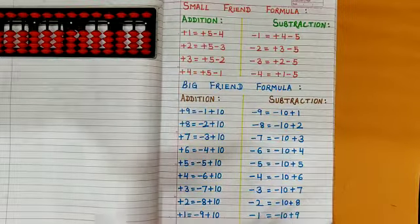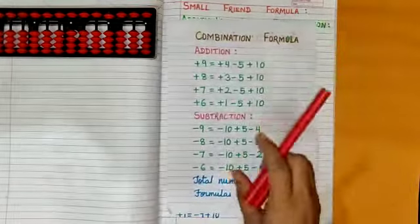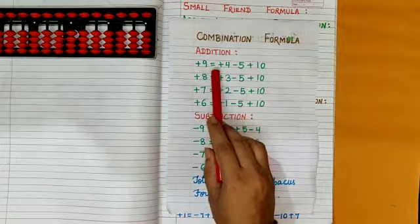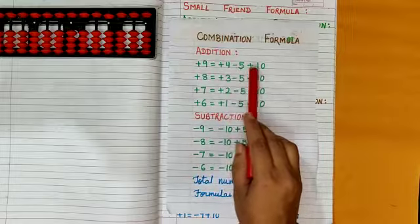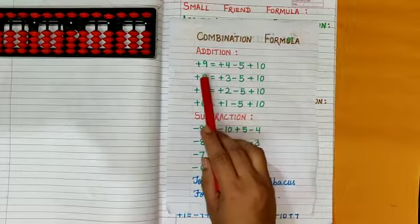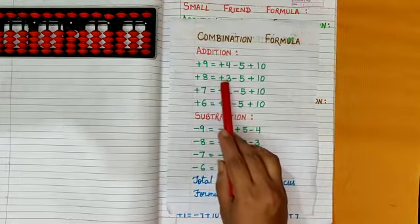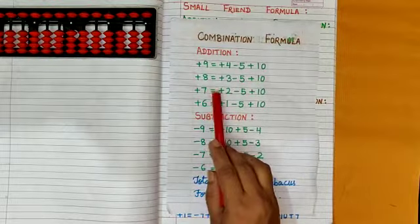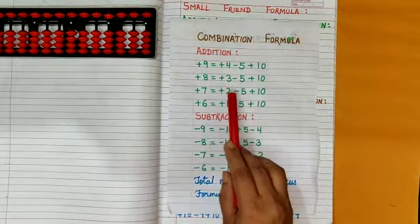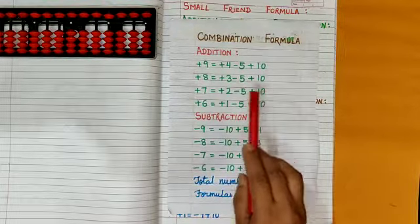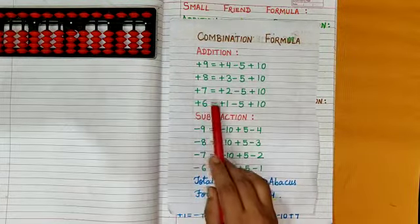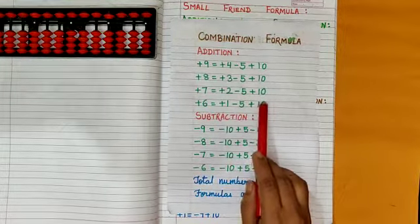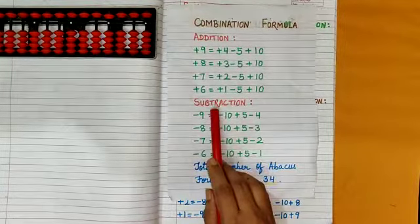Now for combination formula for addition: plus 9 is equal to plus 4 minus 5 plus 10, plus 8 is equal to plus 3 minus 5 plus 10, plus 7 is equal to plus 2 minus 5 plus 10, plus 6 is equal to plus 1 minus 5 plus 10.